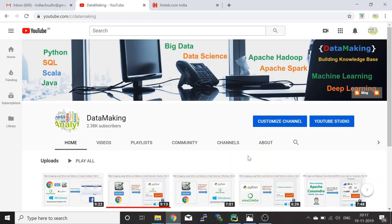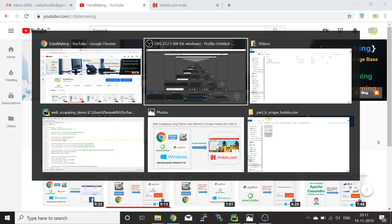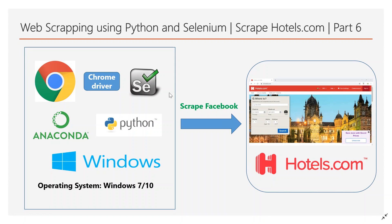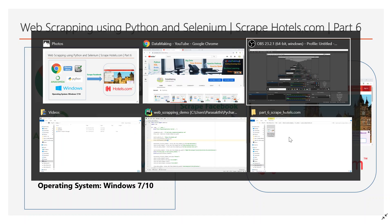We are using the Python Selenium package for web automation. Basically, using this Selenium package and the Chrome browser with the ChromeDriver, we are going to scrape hotels.com — specifically in.hotels.com, which is India's version of hotels.com.